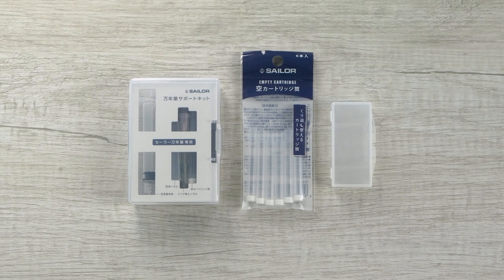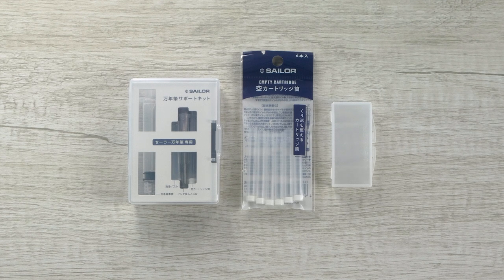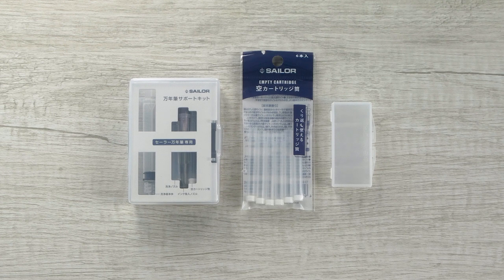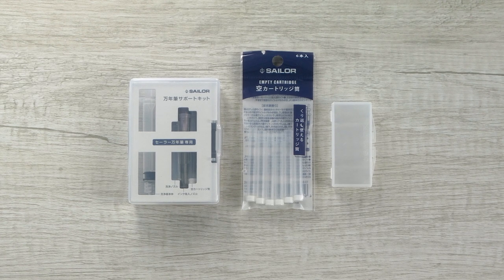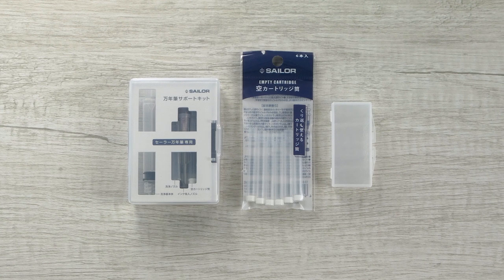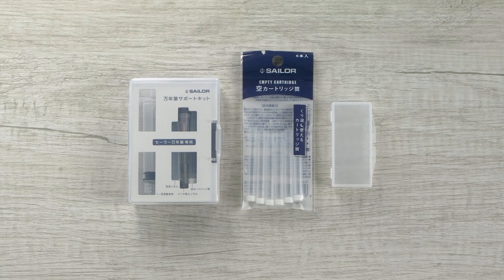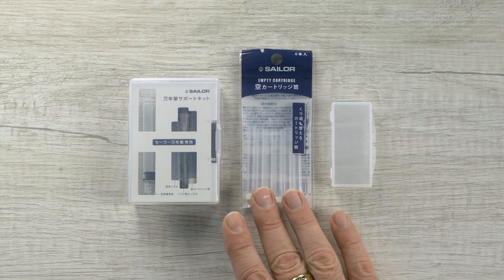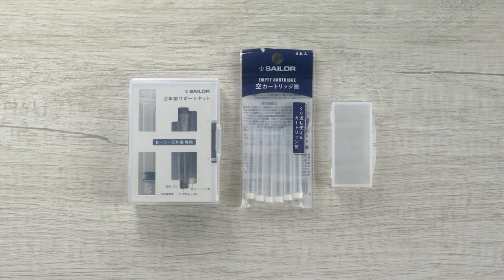First of all, Sailor has come out with a pack, a six pack of empty cartridges. These are handy if you like to refill your cartridges with other colors. Sometimes you get a cartridge that maybe you're using an iron gall or a pigmented ink and they're a little bit harder to clean after a while or maybe the cartridges get a little bit worn out. You can replace it, get a nice fresh clean cartridge and you're good to go.